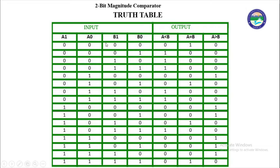We will check all conditions one by one and write down the outputs to make the truth table. For the first case, all inputs are 0, so A equals B — output A equal to B is 1 and others are 0. For the second case, A1=0, A0=0, B1=0, B0=1, meaning B is greater than A, so A less than B is 1 and others are 0. For the third case, 0,0,1,0 — again B is greater than A, so A less than B is 1 and others are 0. For the fourth case, 0,0,1,1 — B bits are greater than A bits, so A less than B is 1 and others are 0.